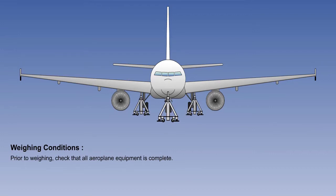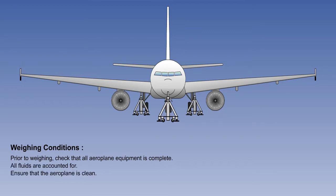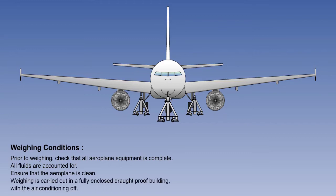The procedures necessary before weighing is accomplished are displayed on screen. Prior to weighing, a check is carried out to establish that all the aeroplane equipment is complete and all fluids are accounted for. Prior to weighing, the aeroplane must be clean, and it is very important that the weighing is carried out in a fully enclosed draft-proof building with the air conditioning off.